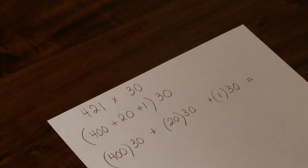400 taken another 10 times would be another 4,000, and 400 taken another 10 times would be another 4,000. So 4,000 plus 4,000 plus 4,000 is 12,000.